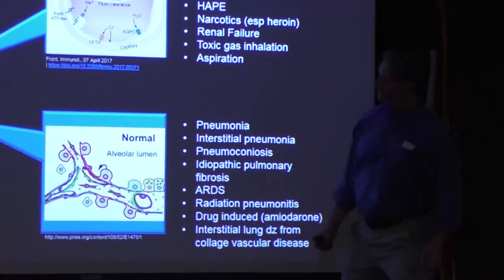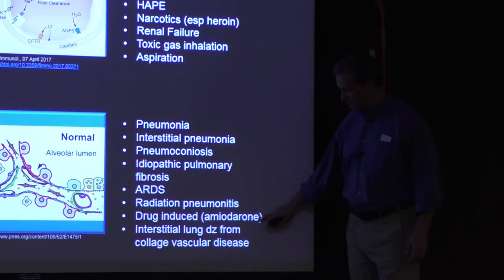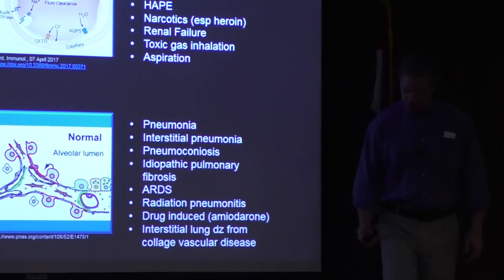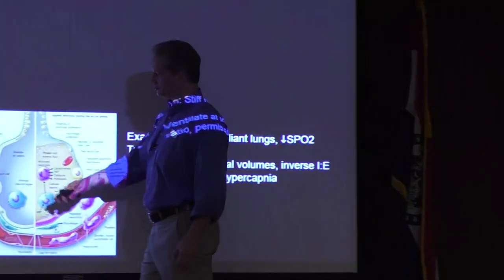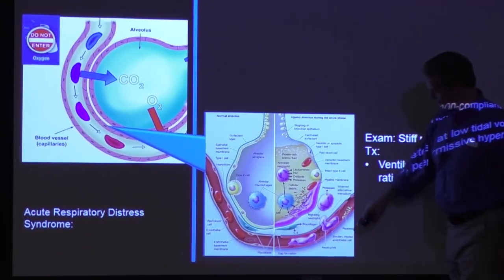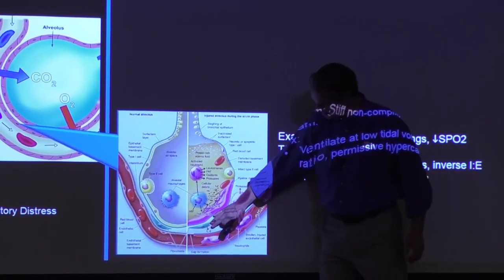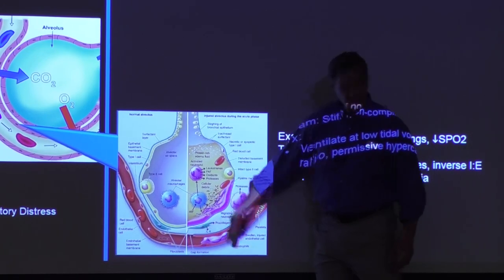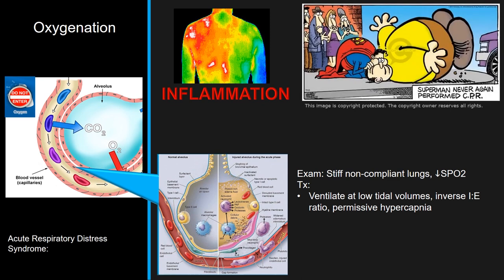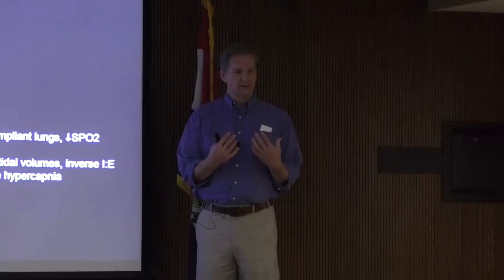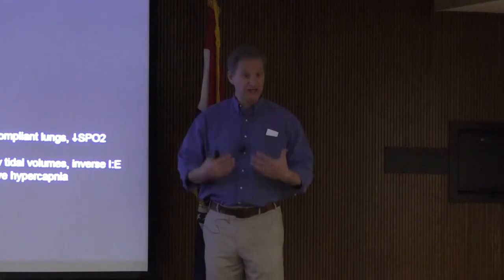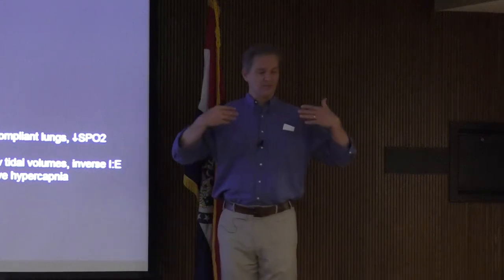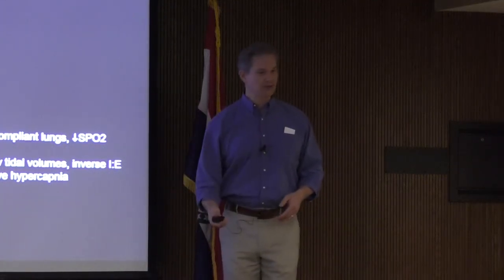Radiation pneumonitis and drug-induced causes like amiodarone destroy the interstitium of the lung. In ARDS, the interface becomes inflamed - increasing diffusion distance so CO2 can't get out and oxygen can't get in. Lungs become less compliant, requiring more muscular contraction and more ATP. Eventually metabolic demands exceed oxygen supply, you stop breathing, and that's how you die.